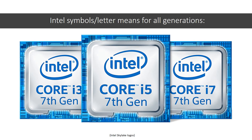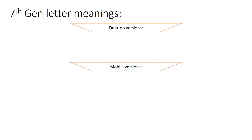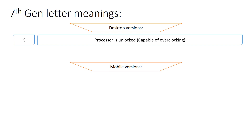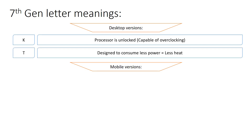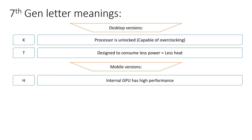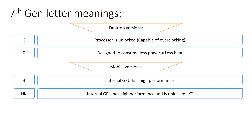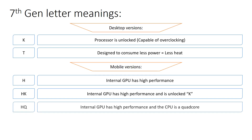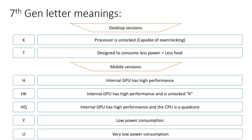Now onto the main part of the video: Intel letter meanings by generation. For the 7th generation desktop versions, K means the processor is unlocked and capable of overclocking. T is designed to consume less power and produce less heat, good for small case builds. For mobile: H means the iGPU has high performance; HK means high performance iGPU and is unlocked; HQ means high performance iGPU and the CPU is a quad core; Y stands for low power consumption; and U means very low power consumption.